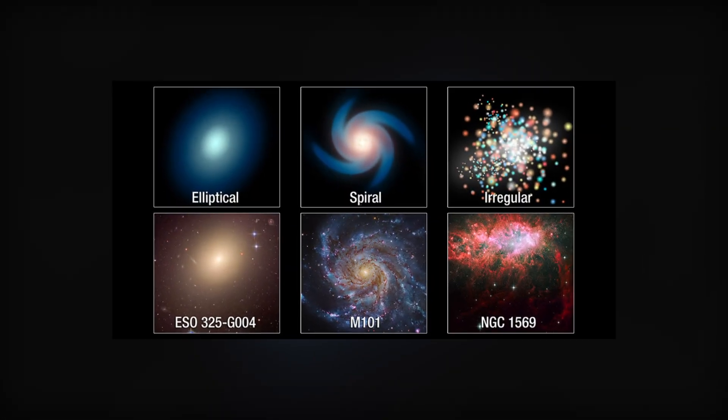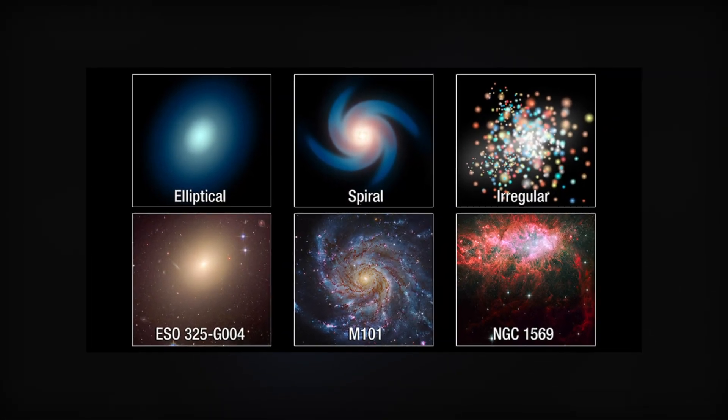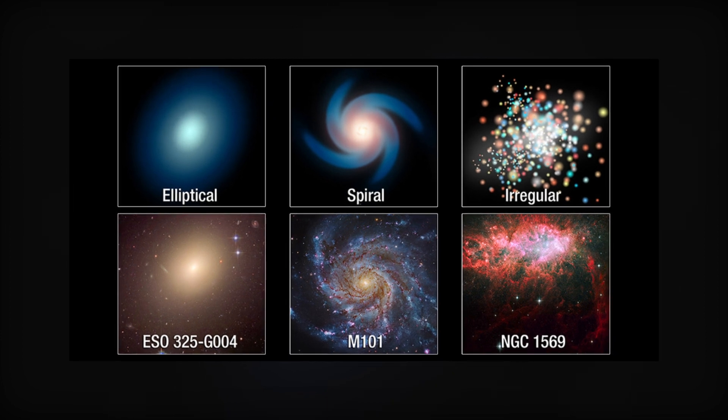Spiral, barred spiral, elliptical, and irregular galaxies are the four main types used to categorize these objects.